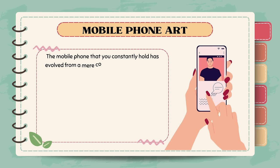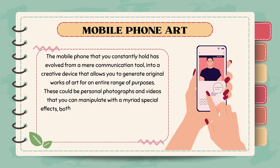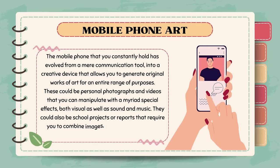Let's start with mobile phone art. The mobile phone has evolved from a mere communication tool into a creative device that allows you to generate original works of art for an entire range of purposes. This could be personal photographs and videos that you can manipulate with special effects — both visual as well as sound and music. They could also be school projects or reports that require you to combine images, incorporate text, and even include simple animation. The tasks that traditional photo editors used to perform manually — like graphing, retouching, airbrushing — are now done with a click of a mouse, a keyboard command, or a few taps on a touch screen.